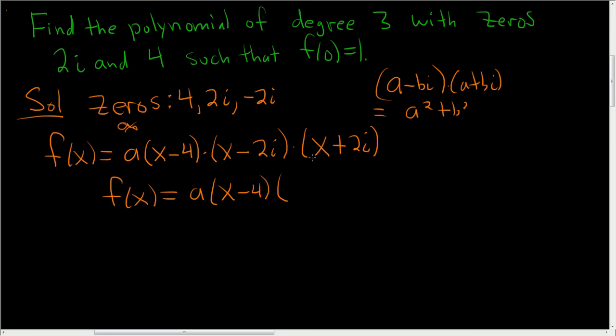So in this case, a is x and b is 2, so you get x squared plus 2 squared, which is 4.